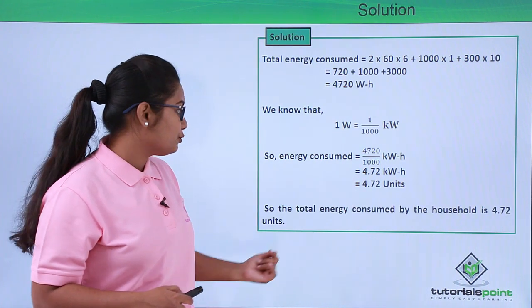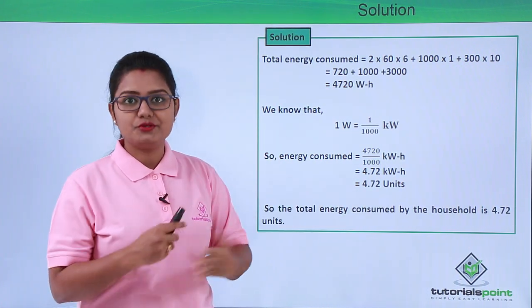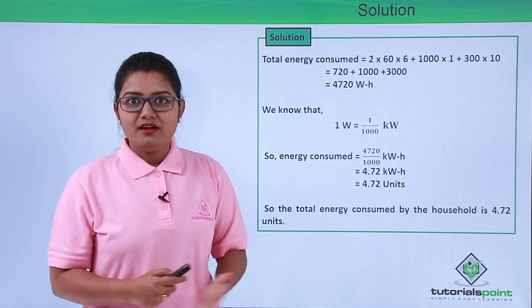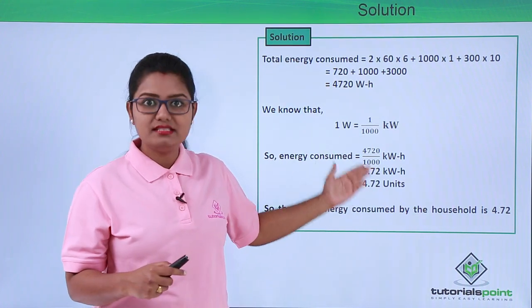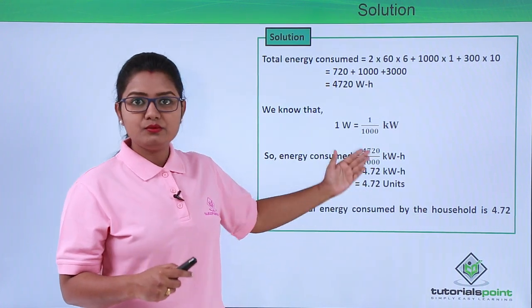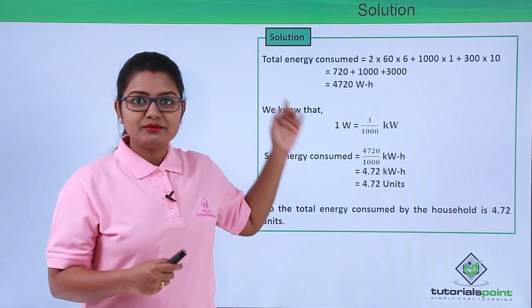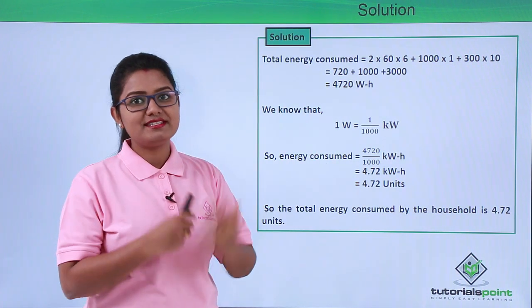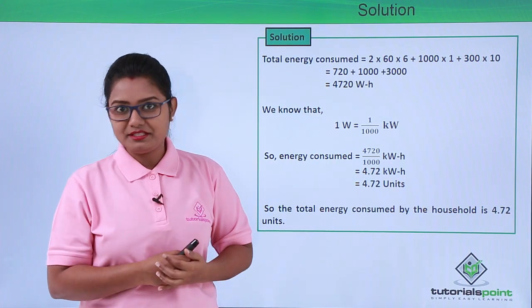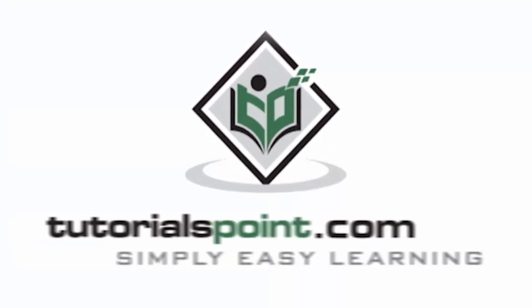The total energy consumed by the household is found to be 4.72 units of energy. This is the energy consumed by using all these electrical appliances. This is the complete solution to the problem. I hope it was understandable. Thanks for watching TutorialsPoint.com — Simply Easy Learning.